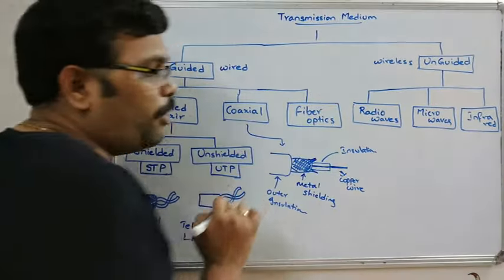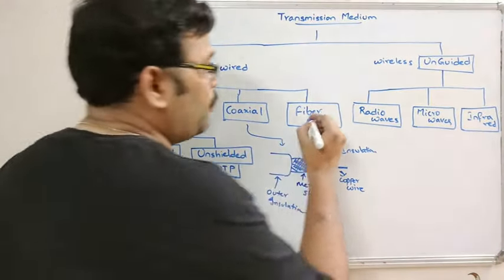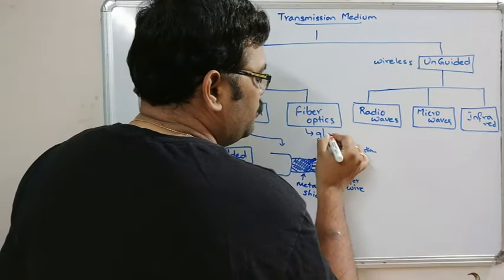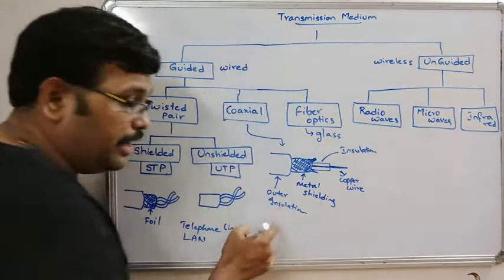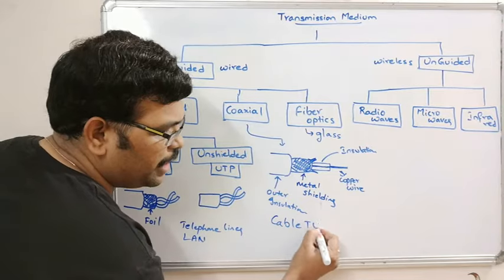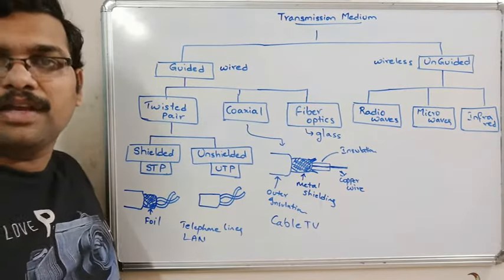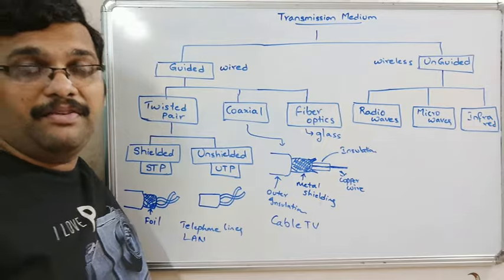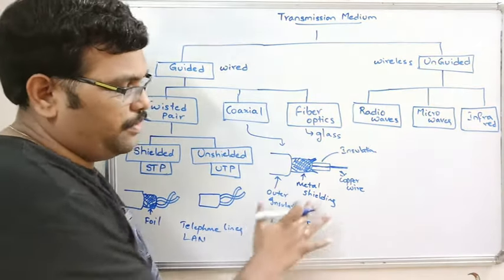Coming to fiber optics — it is made completely of glass and can be used in cable TV networks or telephone networks. The fiber optic cable uses glass as a waveguide to transmit light signals from one system to another system.